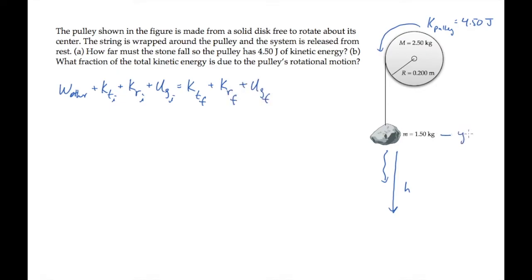If we call the stone's initial height y equals zero, then there's no initial gravitational potential energy. The system starts from rest, so there's no initial kinetic energies, and there are no other forces doing work, so this term is also zero. So we have zero equals the sum of the final energies.